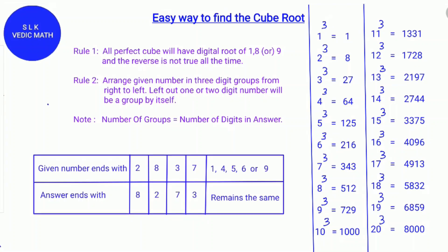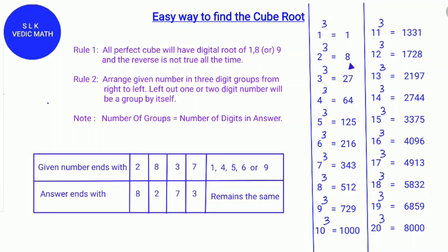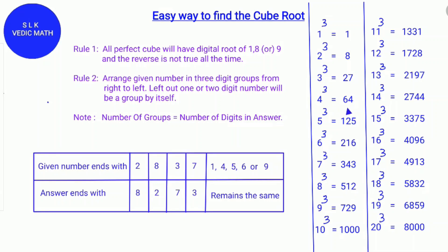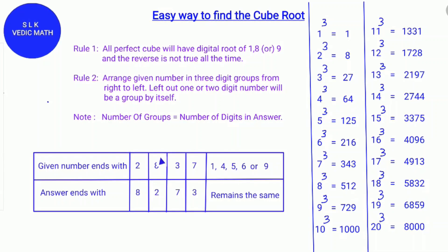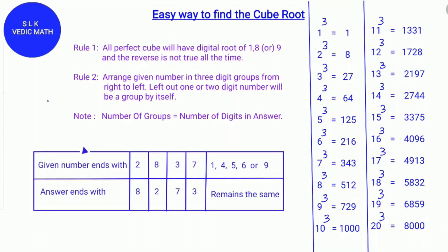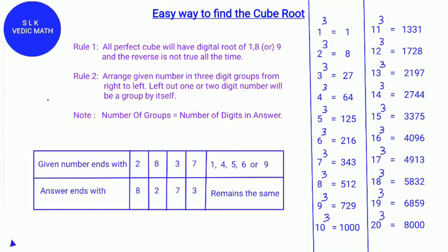Rule 1: All perfect cubes will have a digital root of 1, 8, or 9. For example, 1 cubed is 1 and the digital root of 1 is 1. 2 cubed is 8 and the digital root of 8 is 8. 3 cubed is 27 and the digital root of 27 is 9. 4 cubed is 64 and the digital root of 64 is 1. Remember that the reverse is not true all the time — if a number has a digital root of 1, 8, or 9, it need not be a perfect cube all the time.